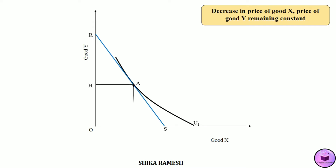Here the consumer is consuming OE amount of good X and OH amount of good Y. Now the price of good Y remaining the same, when the price of good X decreases, the real income or the purchasing power of the consumer increases. So this increase in the purchasing power or real income is shown by an outward shift in the budget line from RS to RT.